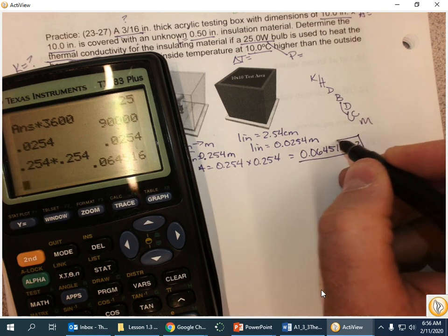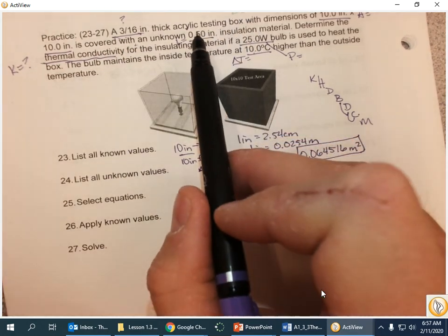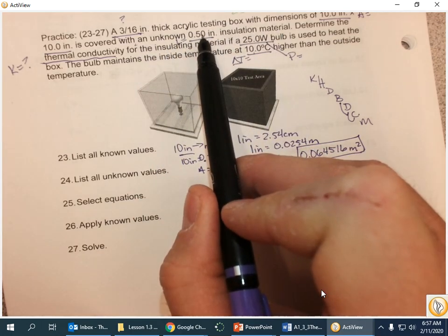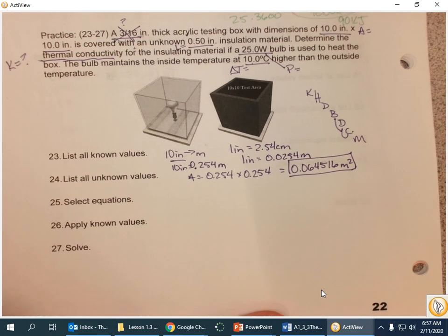I also need the thickness, and what we want to know is the unknown insulating material. So, that's the thickness one. This one was just given to us to throw us off. How about that?